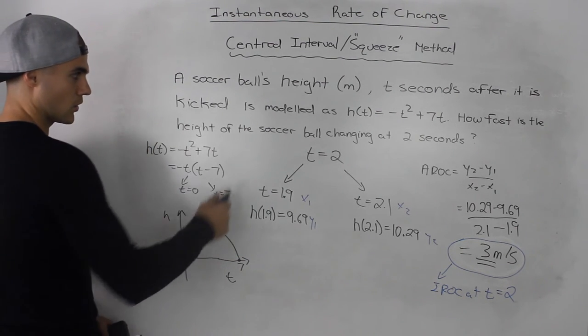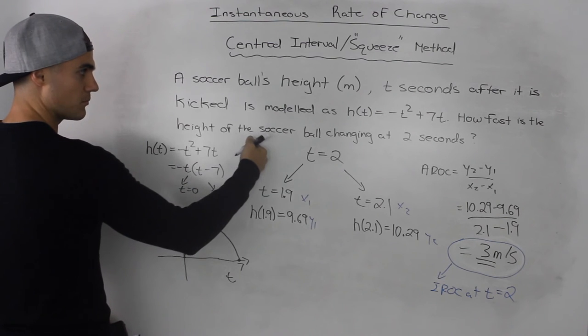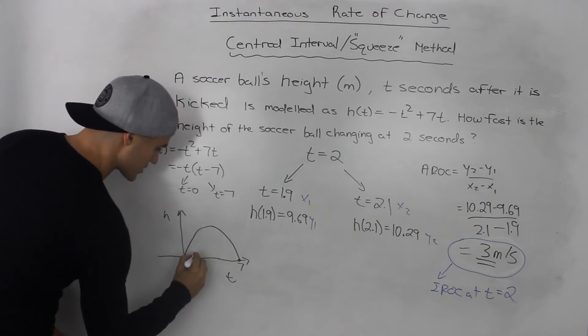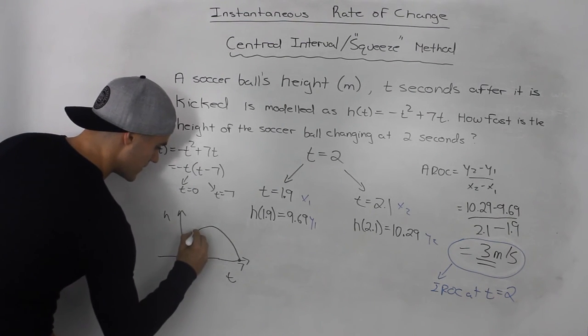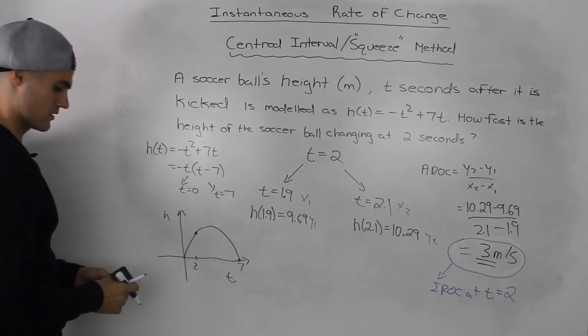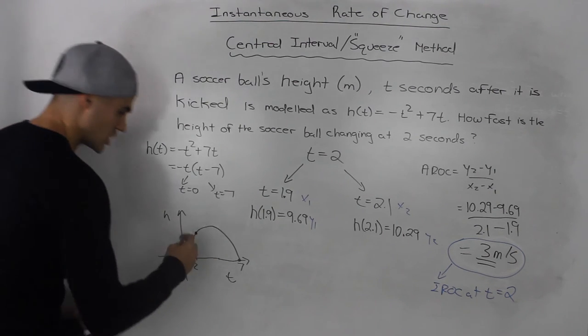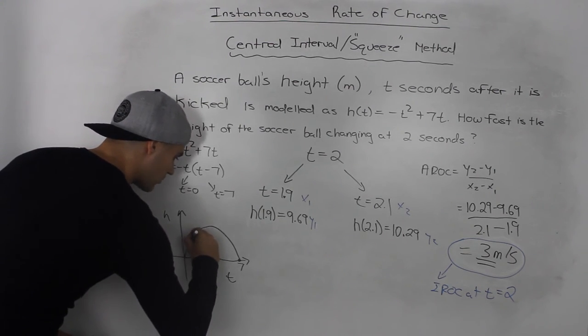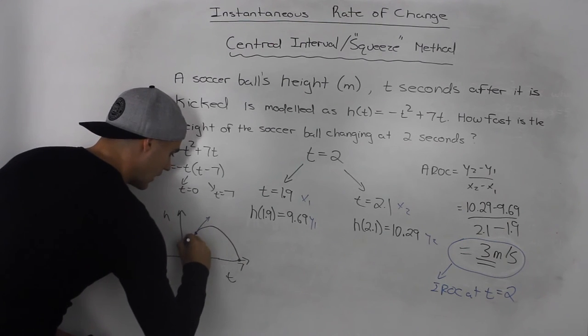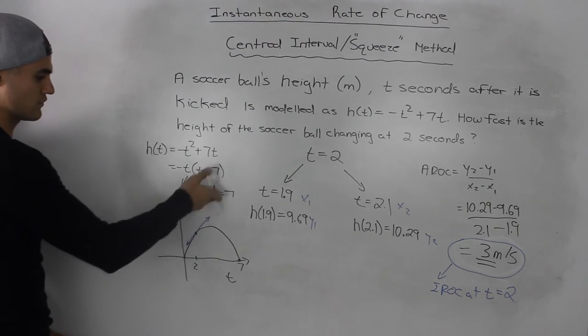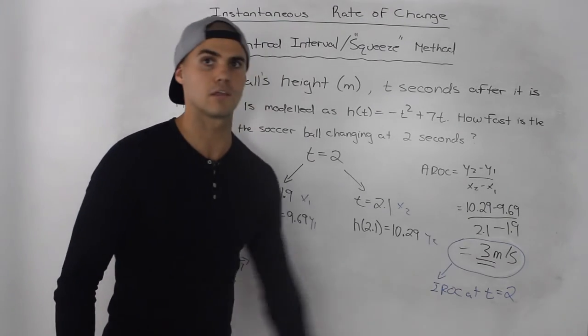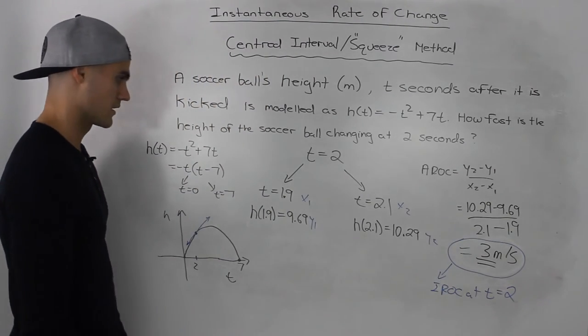And they wanted to know how fast is the height of the soccer ball changing at 2 seconds. So at 2 seconds, somewhere here, how fast is it changing? We would have to find the slope of that tangent. So we found the slope of that tangent and we approximated it to be 3 meters per second.